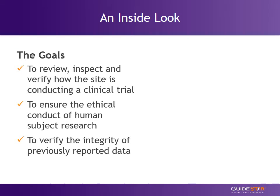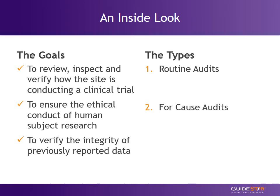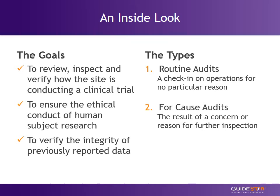Adherence to the study protocol, applicable institutional, state, and federal regulations, and guidance documents will also be evaluated. There are two types of audits: routine audits and for-cause audits. Routine audits are done randomly on research sites as a checkup on the operations. For-cause audits are exactly what they sound like — the FDA has a reason to check in on a research site. Let's investigate what some of those reasons may be.